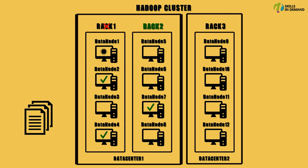Sometimes the map task may find that all the machines which have a copy of the required data are busy processing other map tasks, and none of the machines have any available slots to process this task. In this case, the job tracker would run this map task on any other machine within the same rack where slots are available.